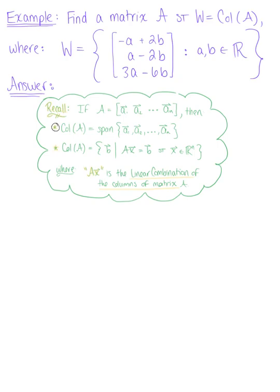So here again, our job is to find a matrix A such that W is equal to the column space of A, and we're given this set W here. So to begin, keeping these definitions in mind, we want to rewrite W as a linear combination of the columns of A.